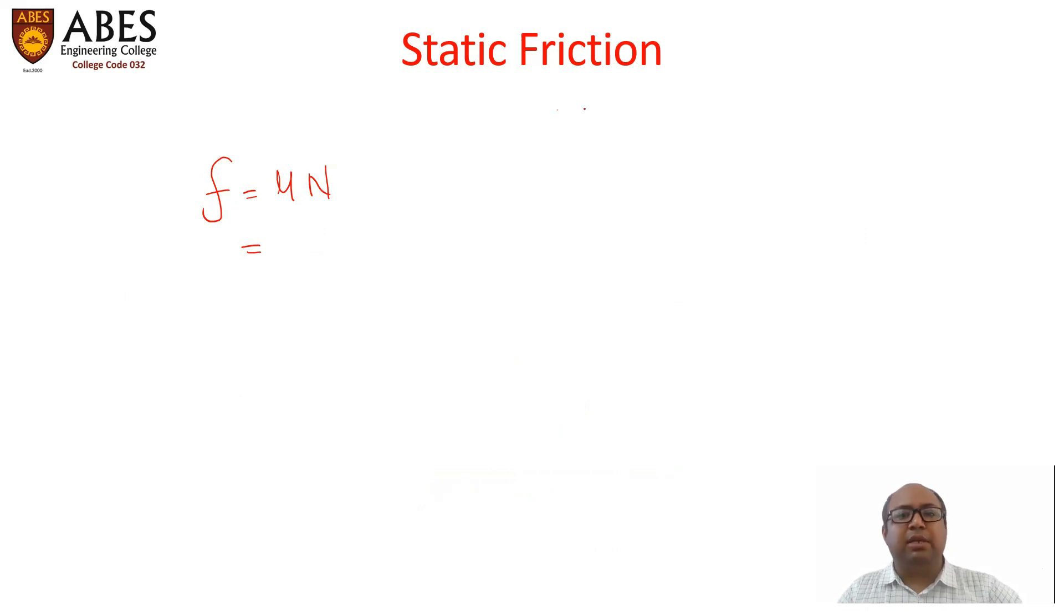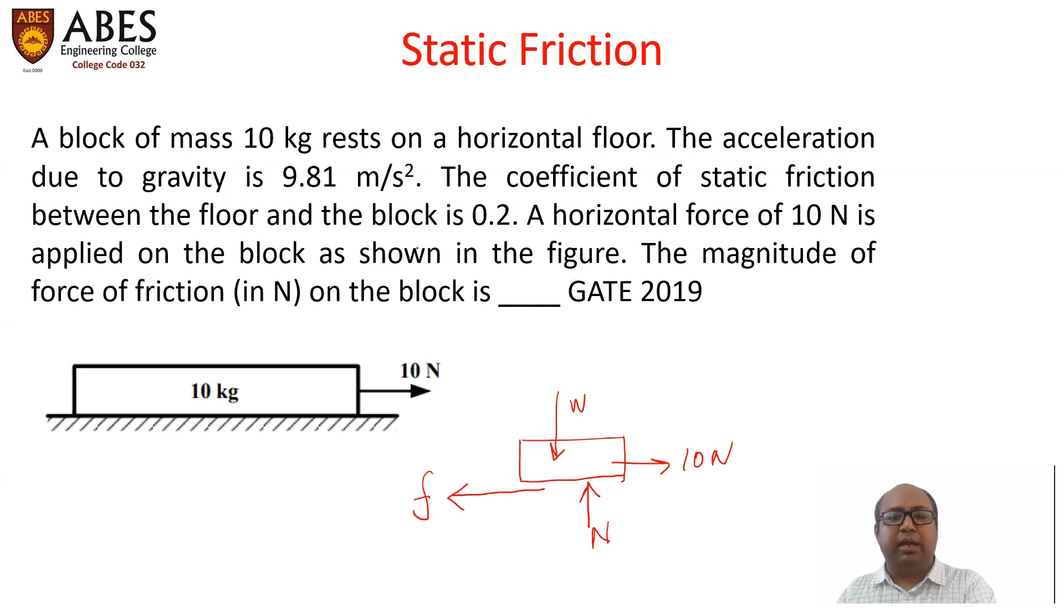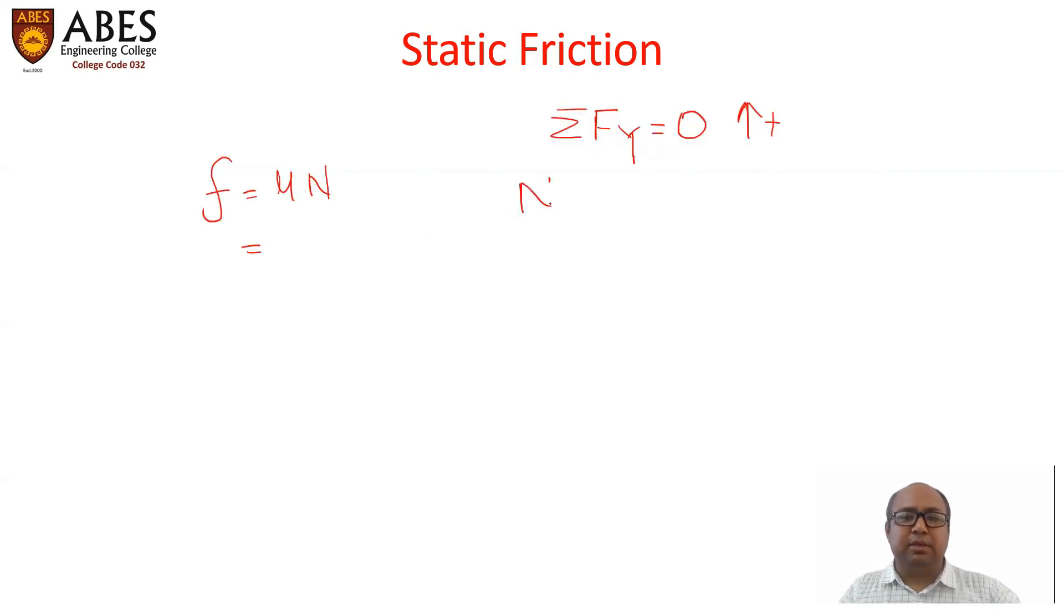If you write summation Fy, because there is no motion or acceleration in the vertical direction, we can easily say, taking upward direction as positive, if you see the FBD, N minus weight of the object equals to 0. So N will be equal to the weight of the object. We know the value of mu is 0.2 and the mass of the object is 10 kg.